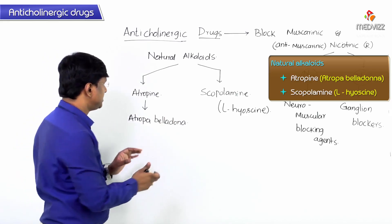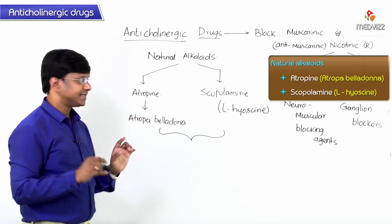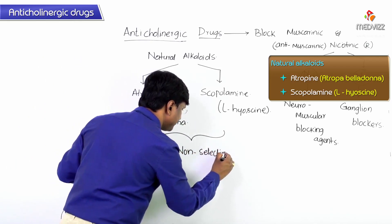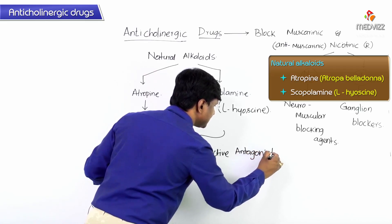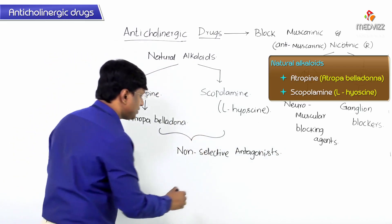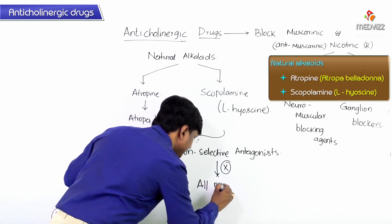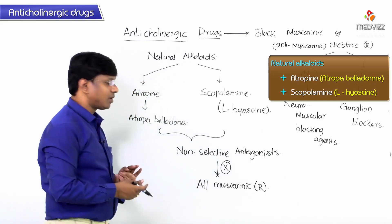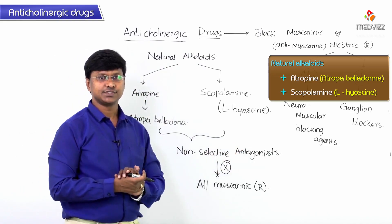An important point to remember is that these natural alkaloids act as non-selective antagonists. They block all the muscarinic receptors, which is the reason why they are considered non-selective antagonists.